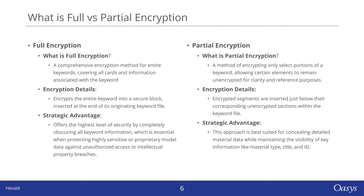Partial encryption focuses on encrypting only specific segments of a keyword. This method allows certain elements to remain clear and accessible for reference, with the encrypted parts positioned directly below the unencrypted sections in the keyword file. This strategy is ideal for hiding in-depth material data while keeping crucial information like material type, title, and ID visible. Each method has its strategic advantage, whether you require maximum security or a balance between confidentiality and accessibility.